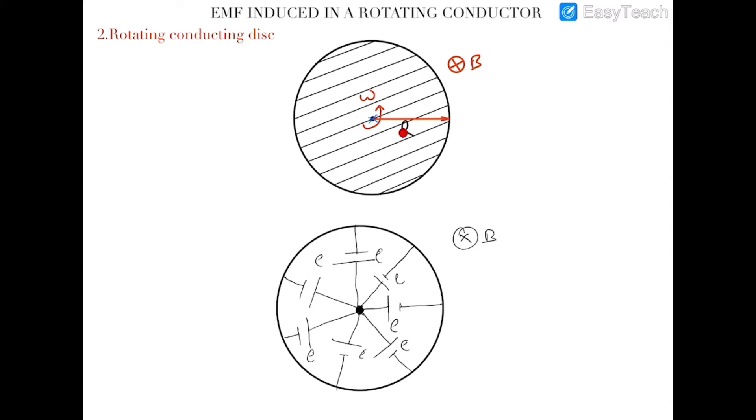The radius of disc is r and this is a conducting disc. Now we all know that the EMF induced in a conducting rod which is rotating about one of its end is half b omega l square.